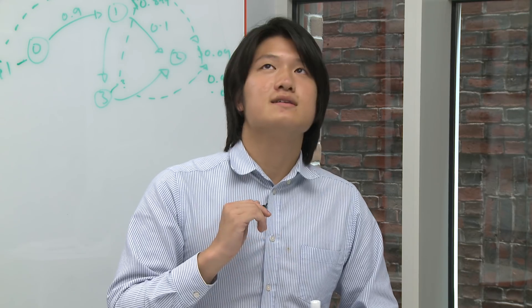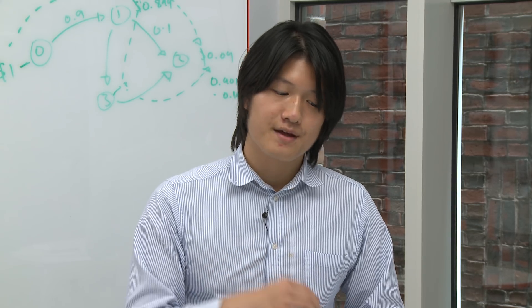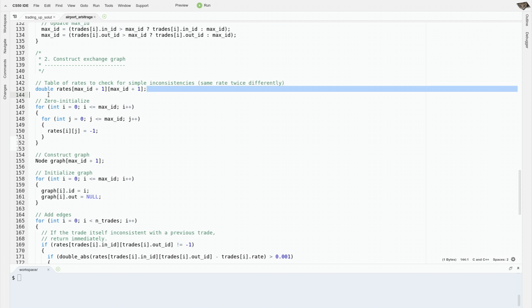One thing that can happen in this problem that the graph won't detect is that the same edge might be specified twice with a different exchange rate. That's an inconsistency, so we'll need to keep track to make sure that that doesn't happen. So we'll have a table of all the exchange rates between two currencies, and if we disagree with this table, then we'll report an inconsistency.